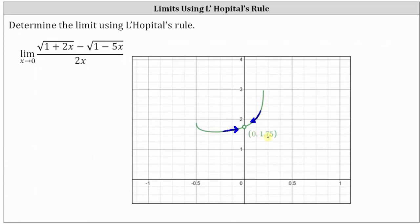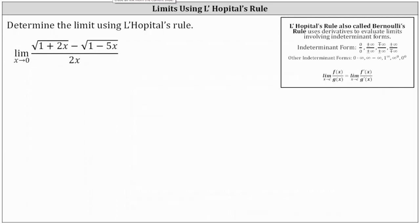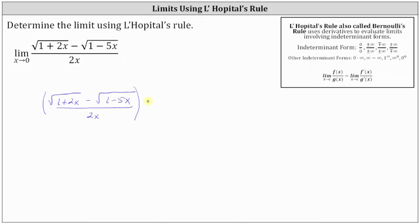Going back to the original limit, let's show how to determine the limit by rationalizing the numerator, which means we multiply the numerator and denominator by the square root of the quantity one plus two x plus the square root of the quantity one minus five x — the conjugate of the original numerator.